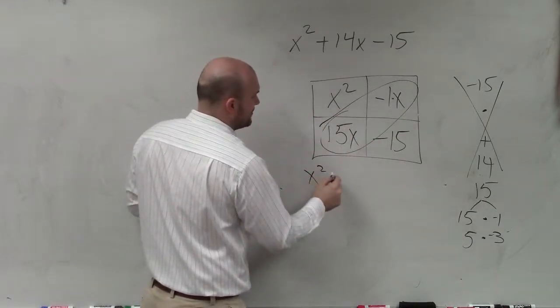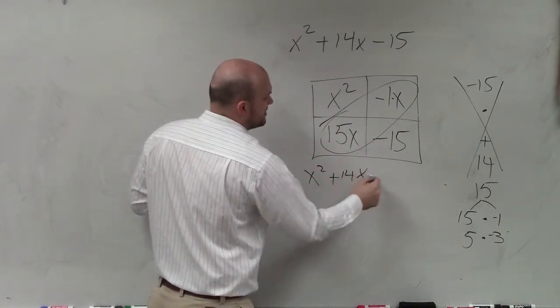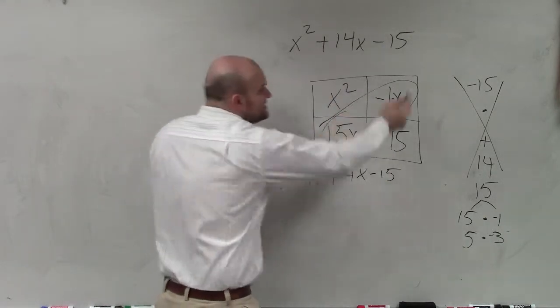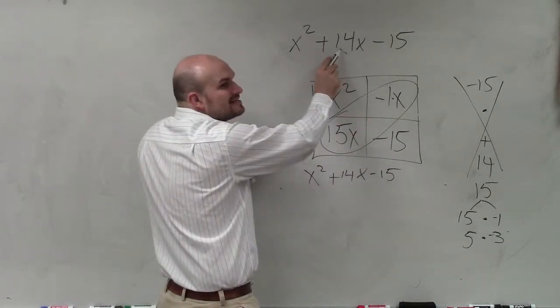And then we get x squared plus 14x minus 15. Look at what our answer is. So these two got to combine to give you that. Does that make sense now?